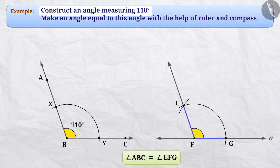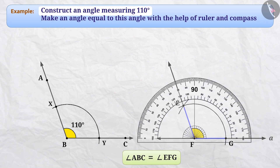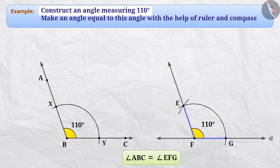If we place the protractor at angle F, we will see that the measurement of angle EFG is also 110 degrees. This verifies that angle EFG created is equal to angle ABC.